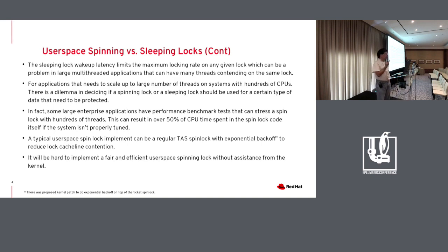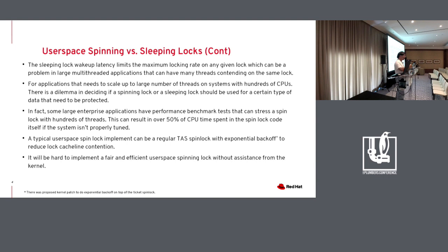For applications that need to scale to a large number of threads and CPUs, there's a dynamic trade-off between spinning and sleeping locks. With a spinning lock, if not many threads contend simultaneously it's probably faster; but as contention increases you get cache line contention and preemption problems. With a sleeping lock you limit how many locking operations you can complete per second. You have to decide which scenario is more likely.